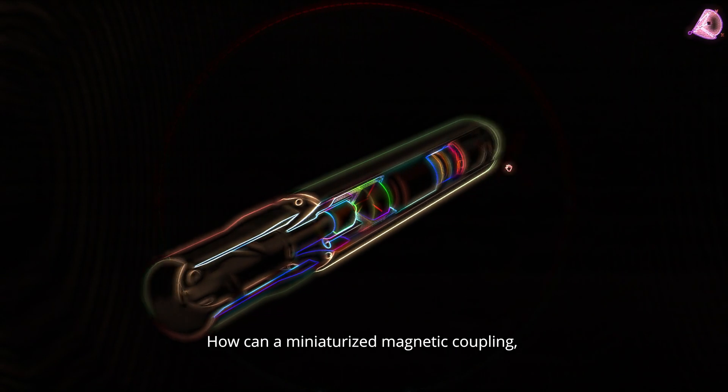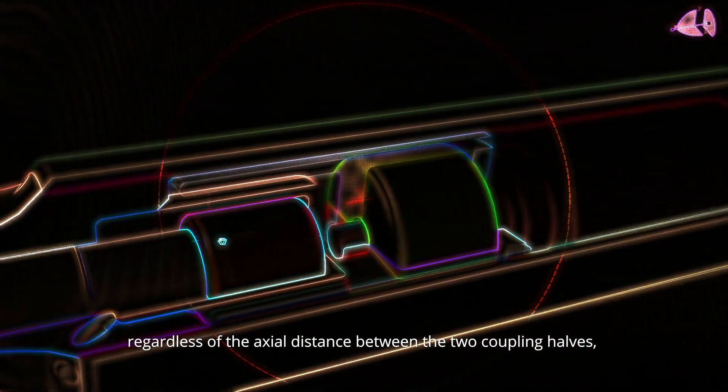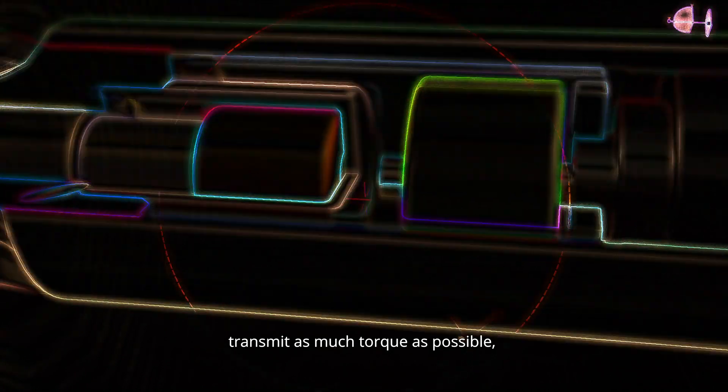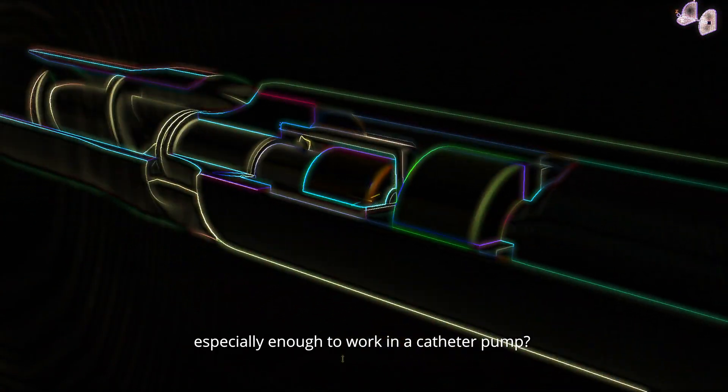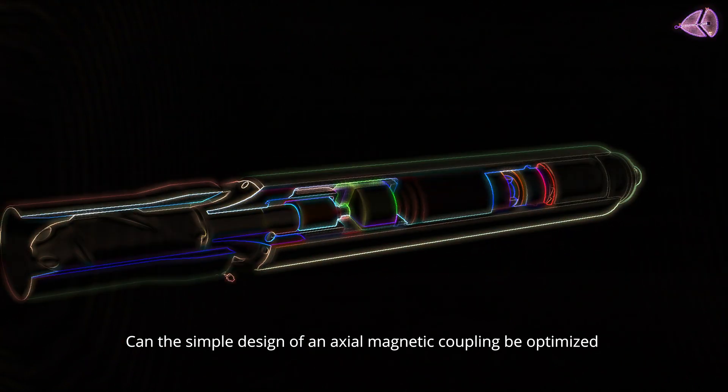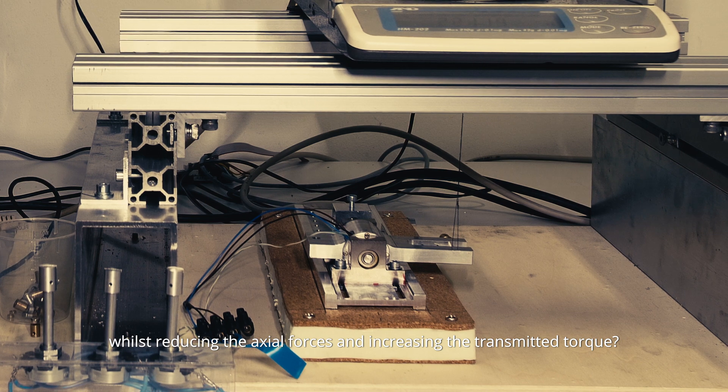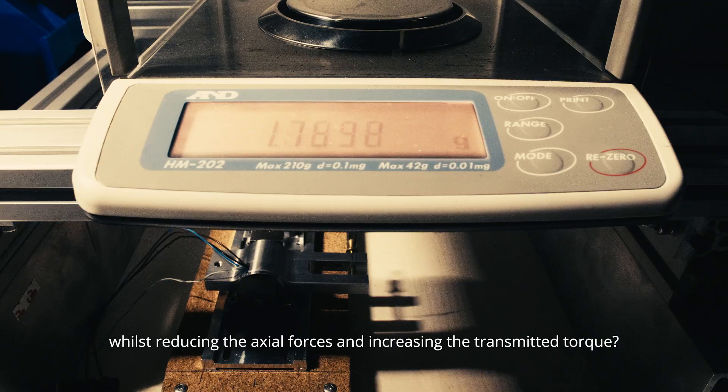How can a miniaturized magnetic coupling, regardless of the axial distance between the two coupling halves, transmit as much torque as possible, especially enough to work in a catheter pump? Can the simple design of an axial magnetic coupling be optimized whilst reducing the axial forces and increasing the transmitted torque?